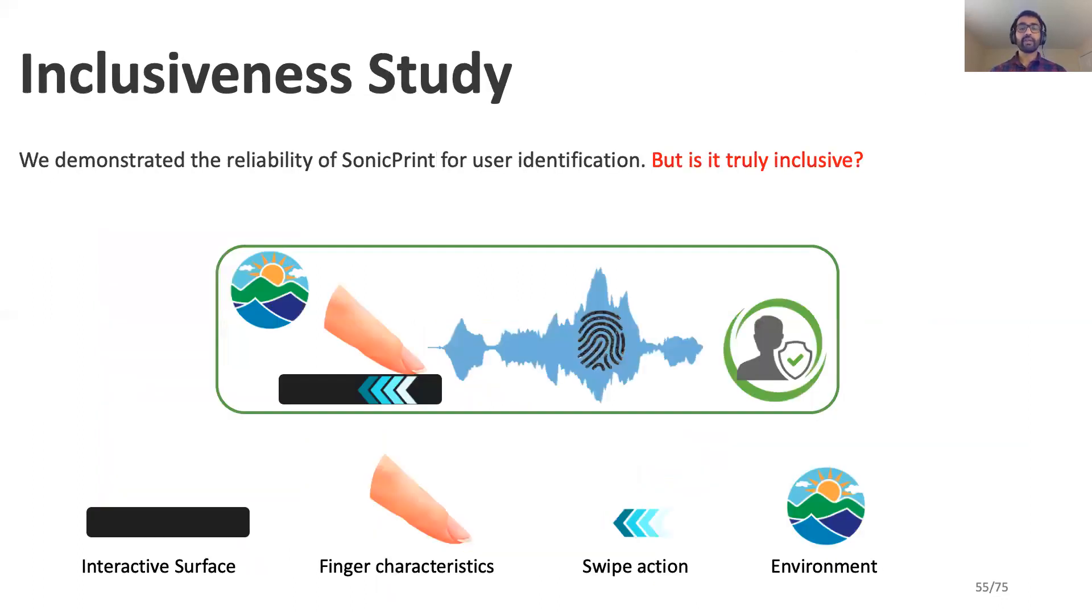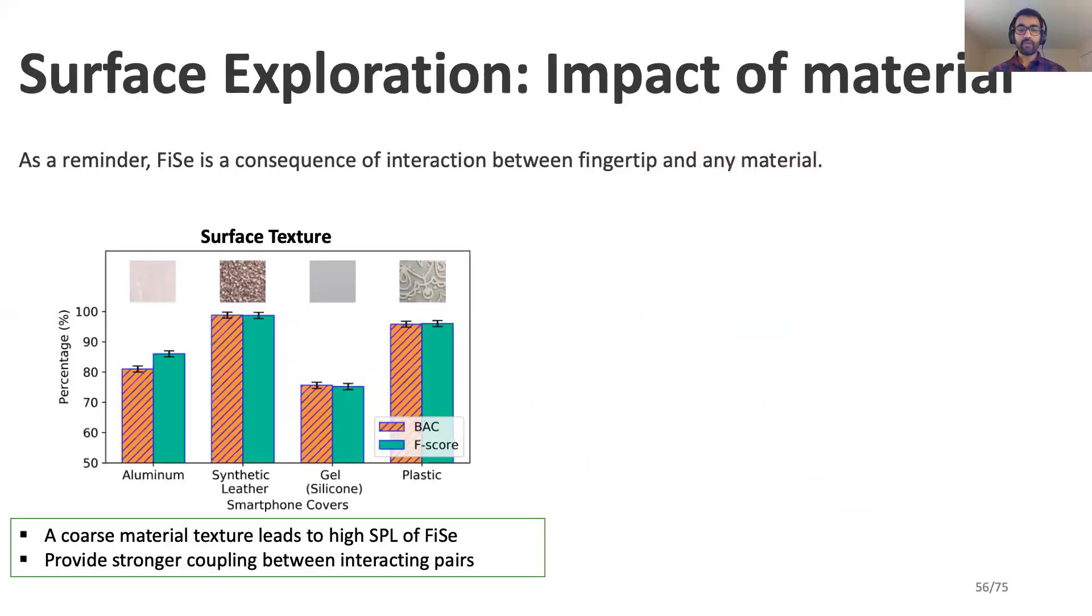We also wanted to examine the inclusiveness of SonicPrint. In order to do this, we identify four attributes such as interactive surface, fingerprint characteristics, swipe action, and environment which vary during real-world deployment.